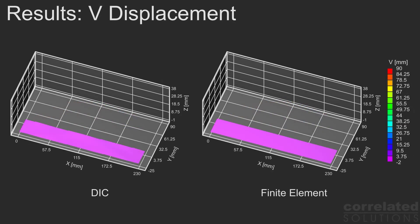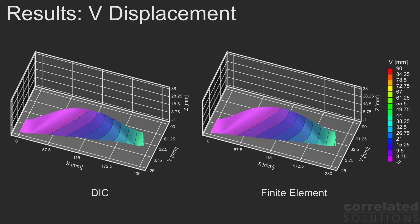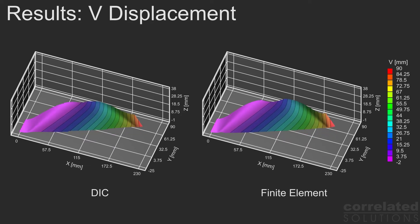This is also the case for the V component, which is aligned with the transverse direction to the fibers. The V displacement is highest in magnitude, with a range from minus 2 to 90 millimeters.